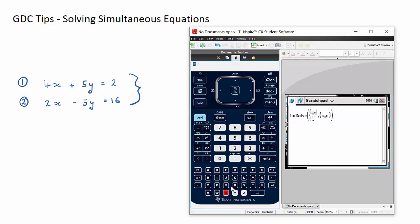4X plus 5Y equals 2. And then I tab down to the second line: 2X minus 5Y equals 16.